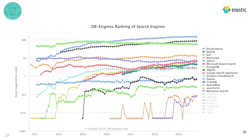Looking at DB-Engine rankings for search engines, you can see Elasticsearch is at the top. Note that this is a logarithmic scale, so even a minor visual difference between Elasticsearch and other tools is actually quite large and significant on a linear scale.